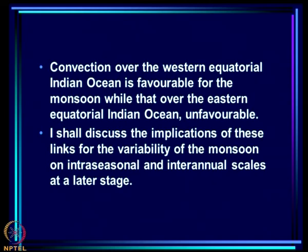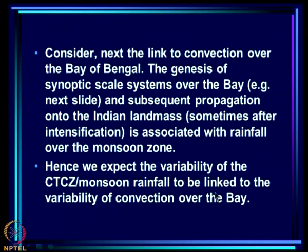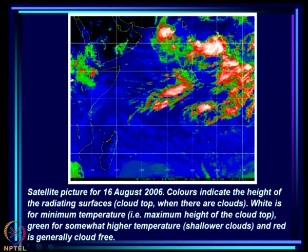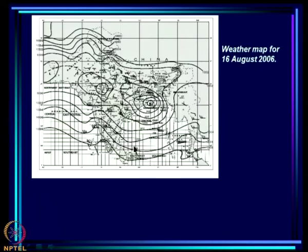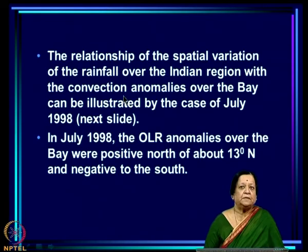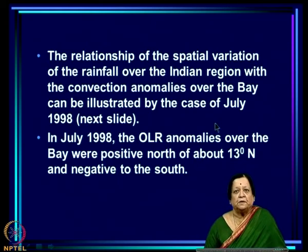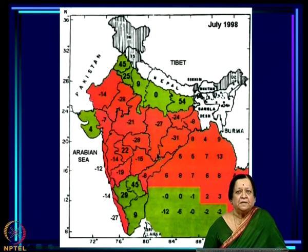The implications of these links for variability on inter-seasonal and inter-annual scales will be discussed later. Now consider the link to convection over the Bay of Bengal. Genesis of synoptic systems over the Bay and subsequent propagation onto the Indian landmass is associated with rainfall over the monsoon zone — for example, one synoptic-scale system over the Bay and another that has already traveled to the other end of the monsoon zone, with a strong depression versus a low pressure system.